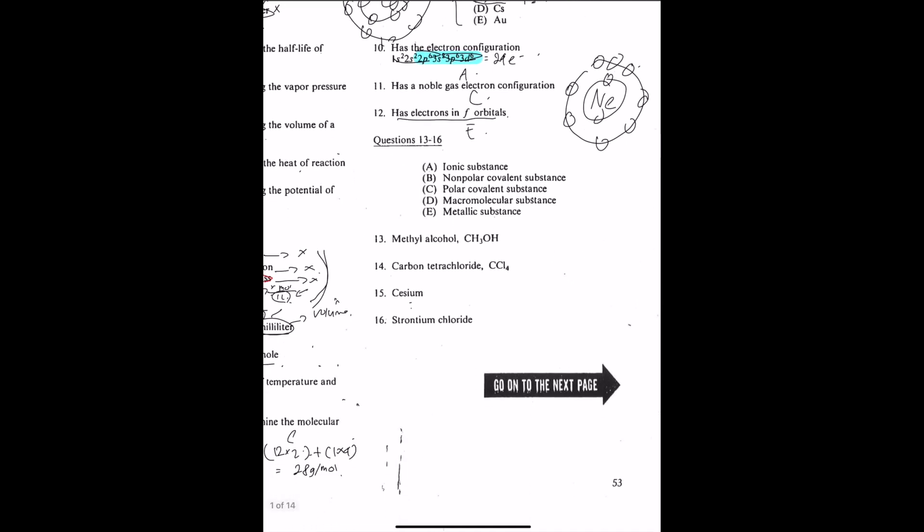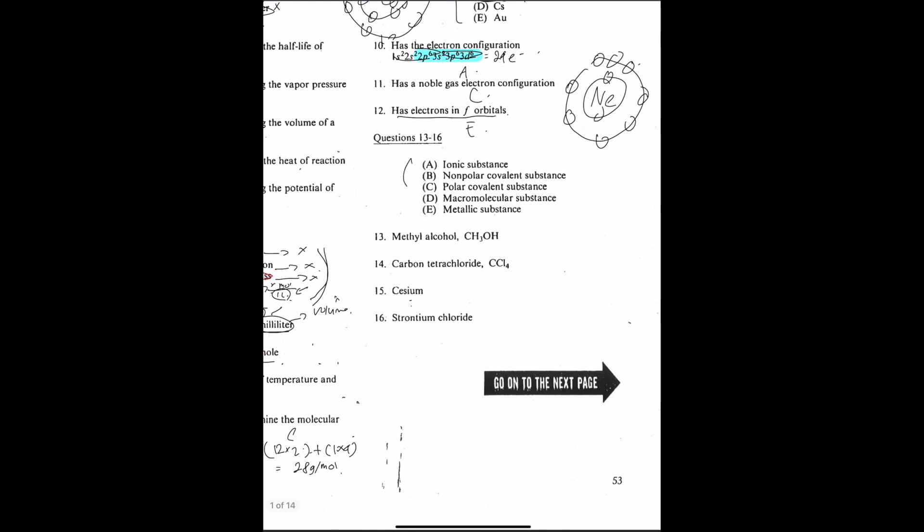Number 13, methyl alcohol. Methyl alcohol basically looks like this with three hydrogens attached. We know that alcohols are polar substances. So number 13 should be C.